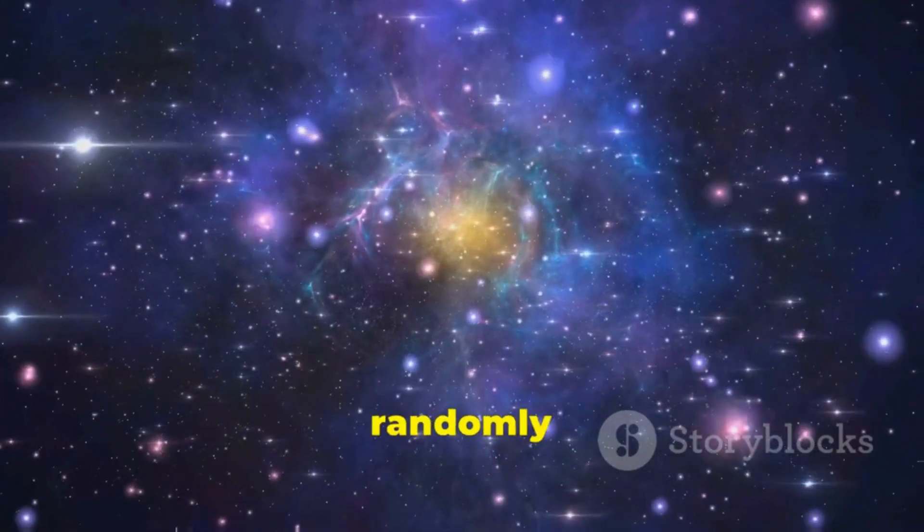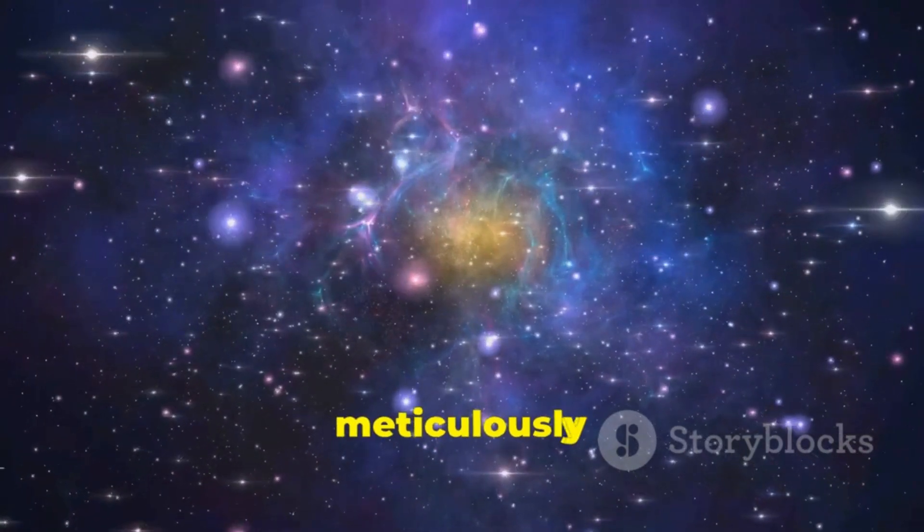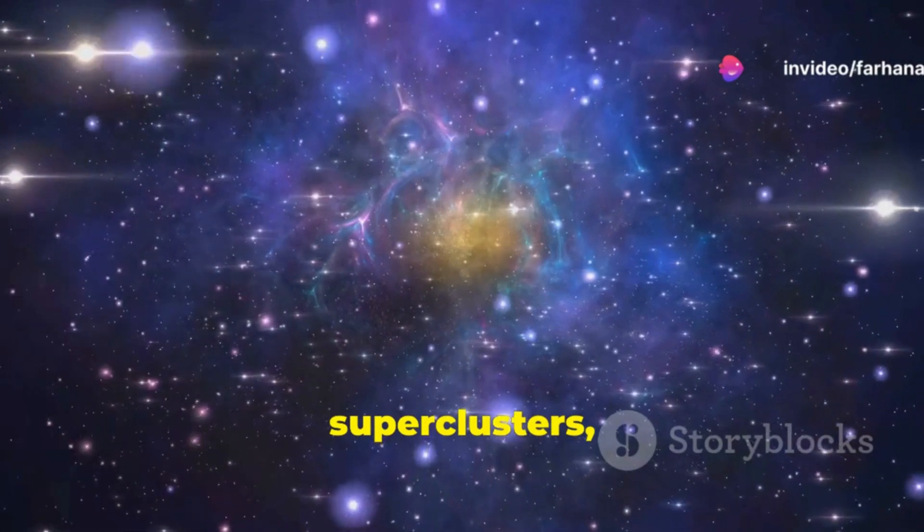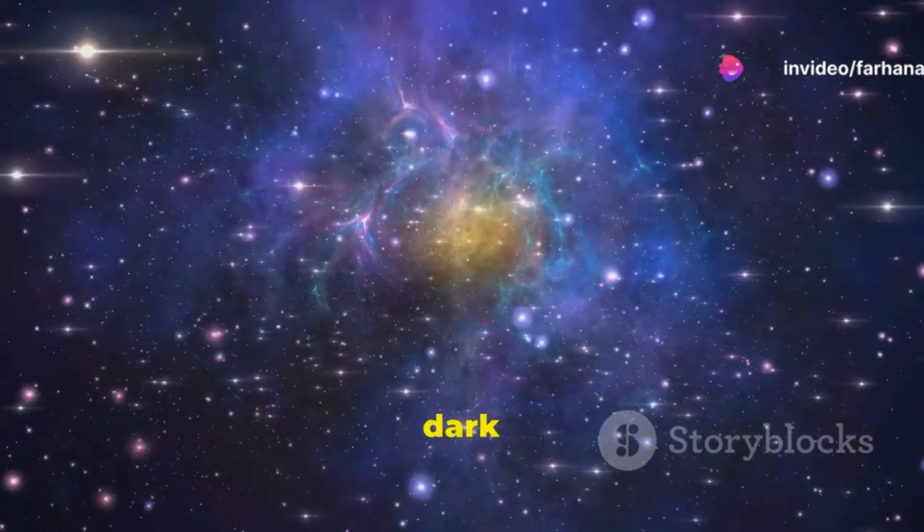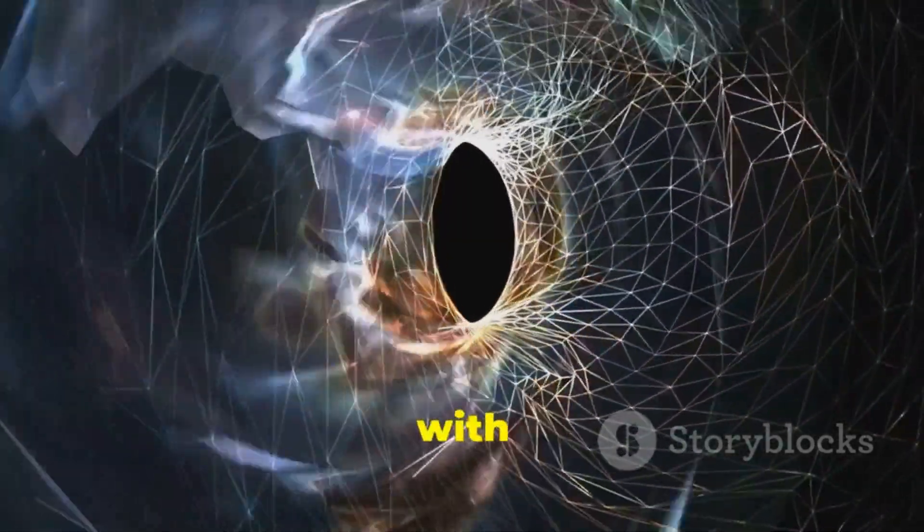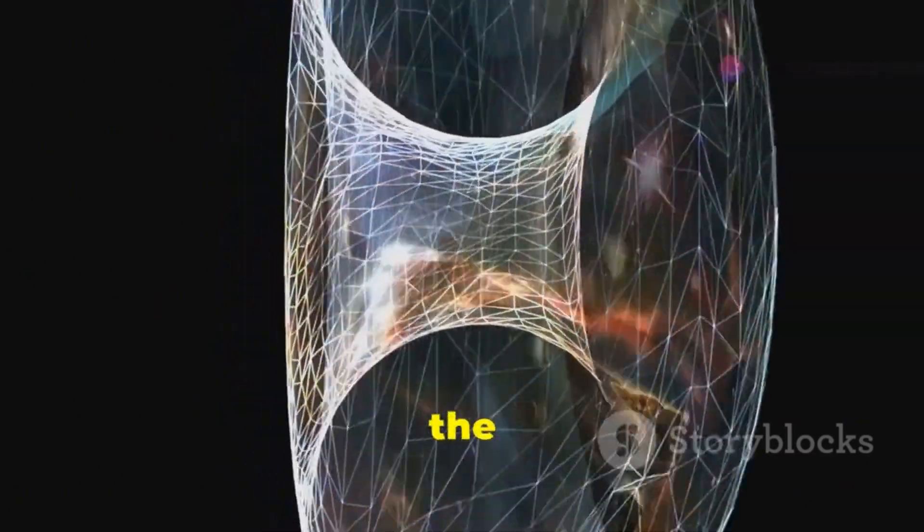Interestingly, galaxies are not randomly scattered throughout the universe. Instead, they are meticulously organized into clusters and superclusters, interconnected by filaments of dark matter. Dark matter, an invisible form of matter, does not interact with light and constitutes about 85% of the matter in the universe.